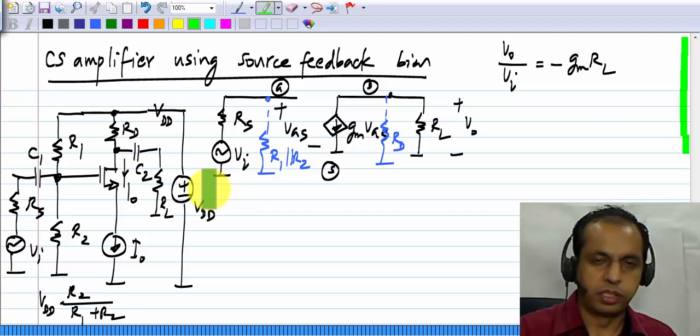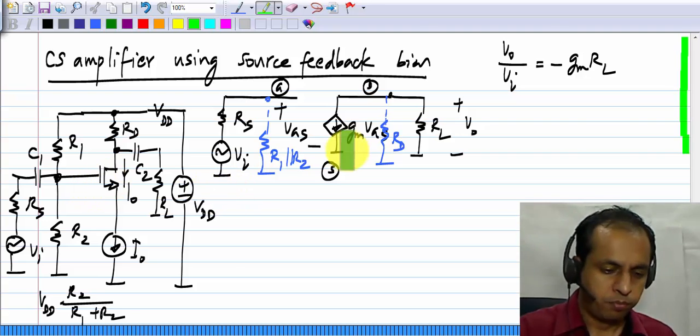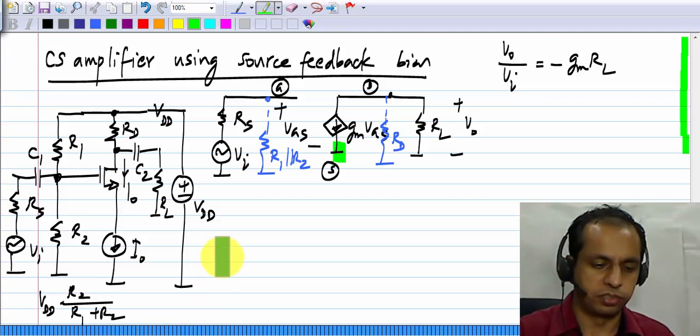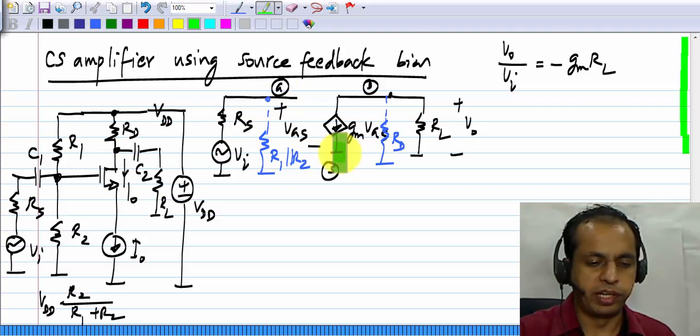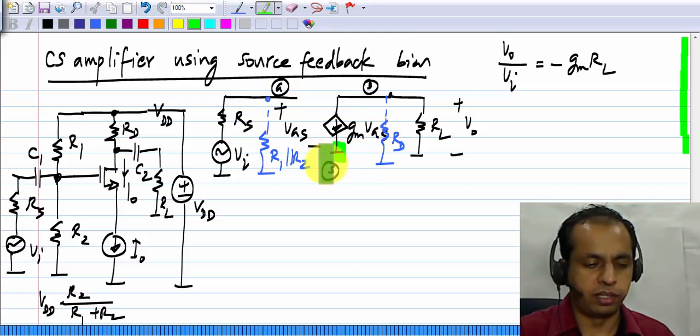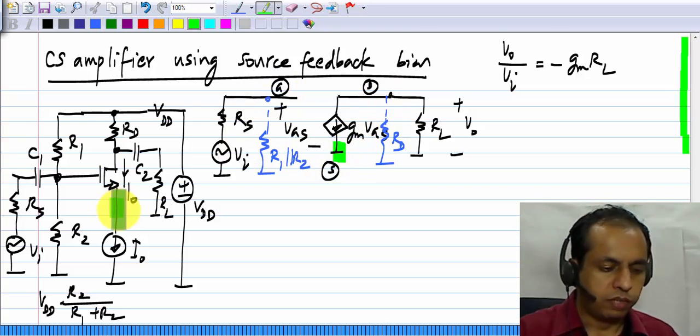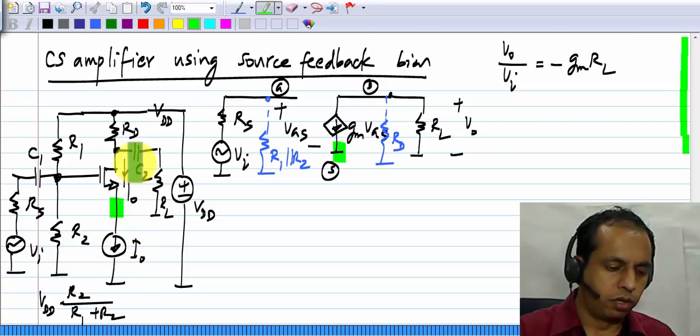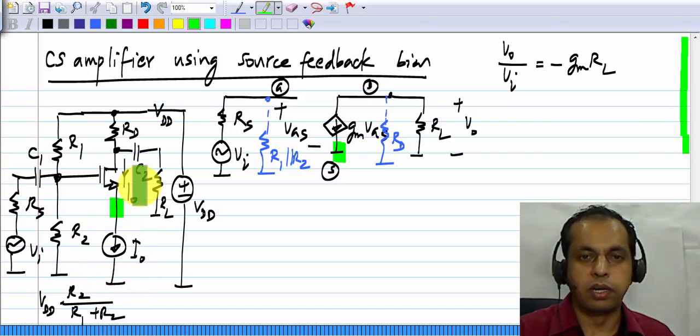Now, you can see that one thing is still left out. There is one difference between this and that. The source of the MOS transistor must be connected to ground in the small signal picture. That is why it is a common source amplifier, so that the input is applied between gate and source, output is taken between drain and source.